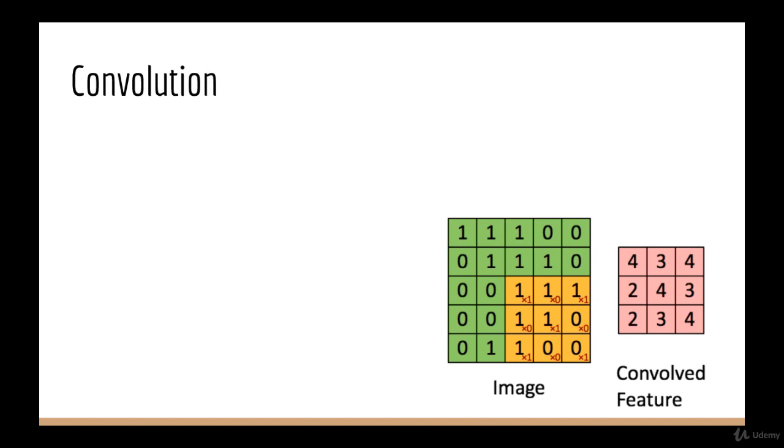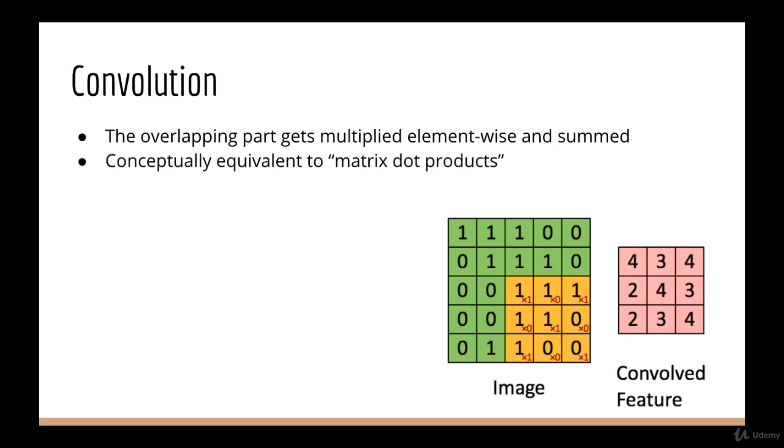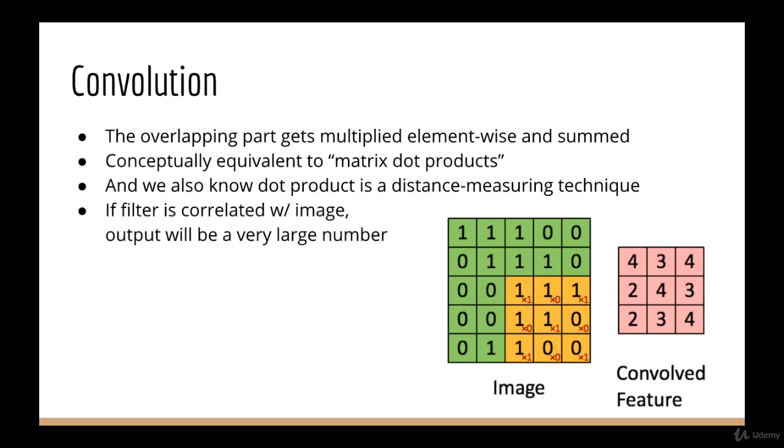So what is this doing? Well, the filter essentially slides over every possible position on the image. And each time it does that, the overlapping parts get multiplied element-wise and added together. That's all there is to convolution, multiplication and addition. Now conceptually, we know that this is sort of the equivalent of a matrix dot product, and we know that a dot product is conceptually like a distance measuring technique, or in other words, it measures correlations. So if the filter is very correlated with this piece of the image, then it's going to output a very large number. If the filter is very different from this piece of the image, then it's going to output a very small number.